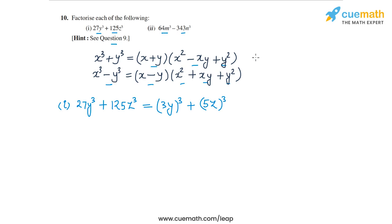Now we're going to use the first identity x³ + y³. This will be equal to x + y, which is 3y + 5z, times x².